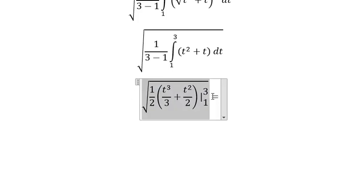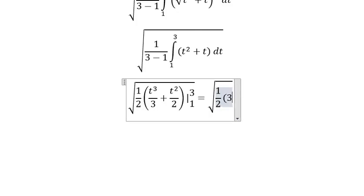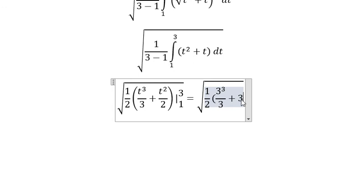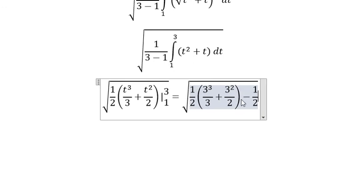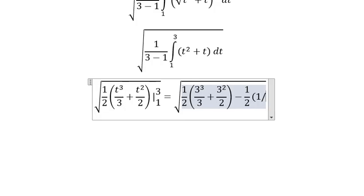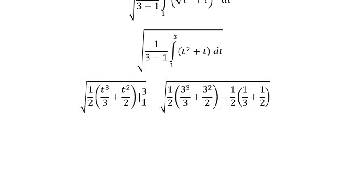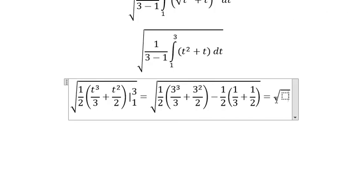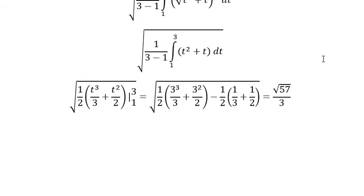And we got the final answer. That is about the square root of 57 over 3. This is the end. Thank you for watching.